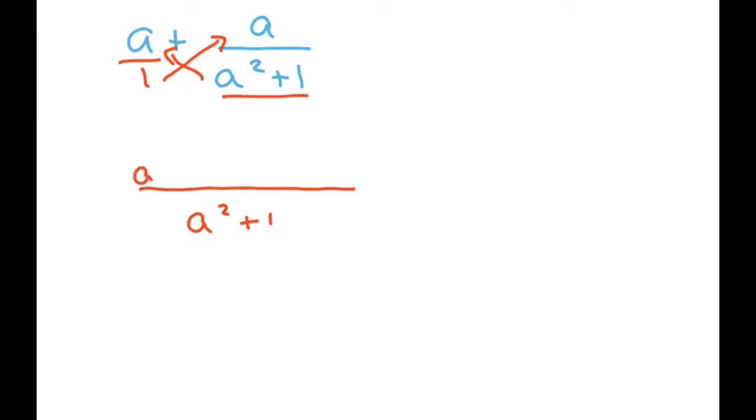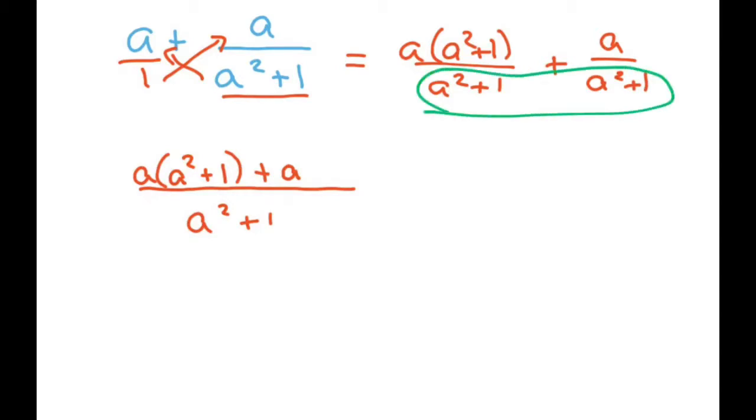And you get a times a squared plus 1 plus a. Or you could write it out even further. You could do a times a squared plus 1 divided by a squared plus 1 plus a over a squared plus 1. Kind of skipped a step. And since they're the same, I put it all over this.